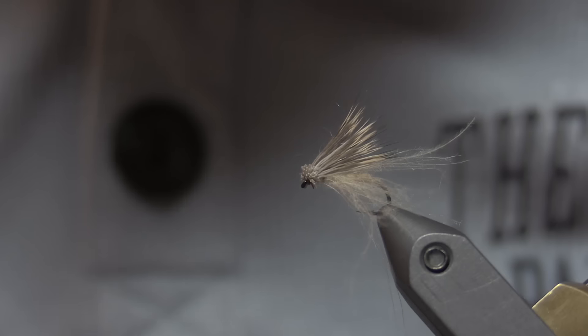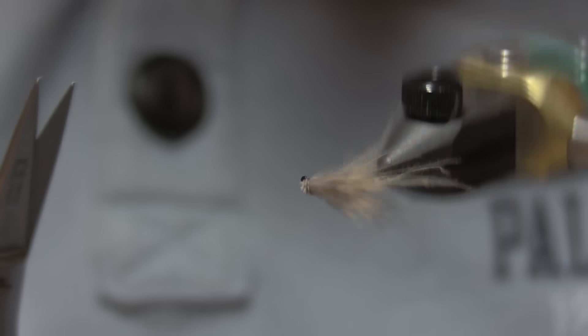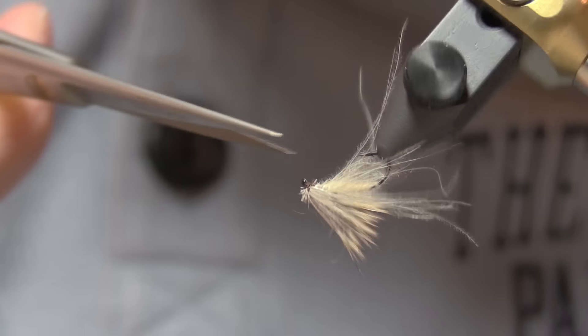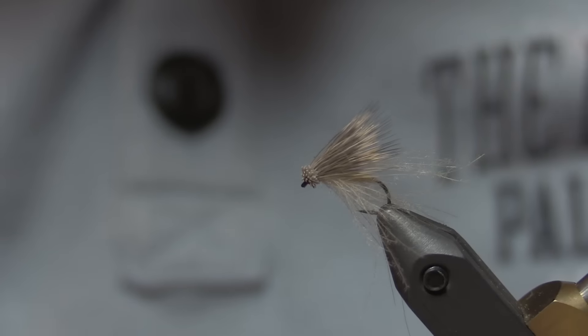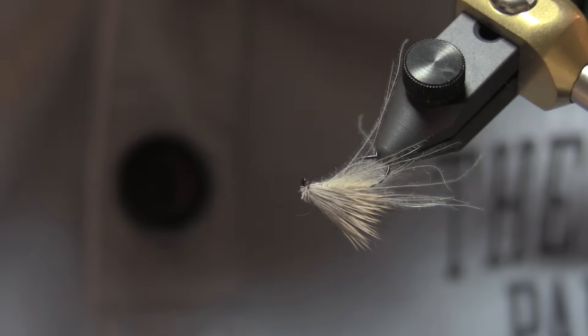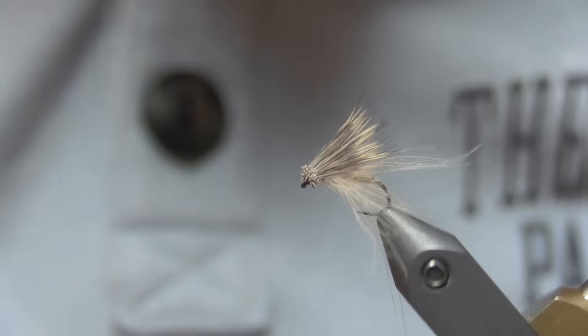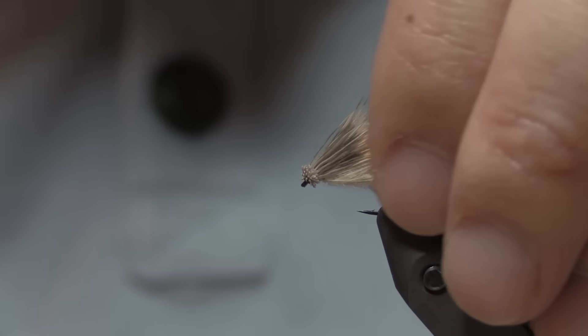As you can see, the hair is nice on top, it's not underneath. Good look. Anything sticking out, trim it off. And that's the CDC and Elk. The fibers really in the water make it seem like it's an emerging insect.